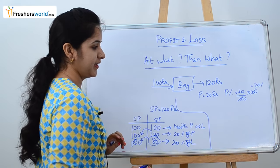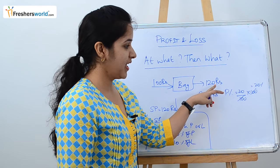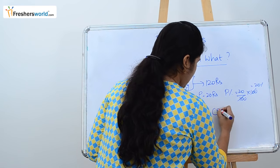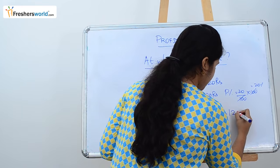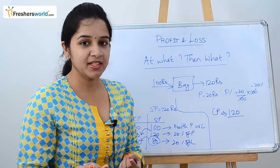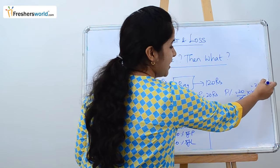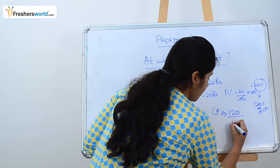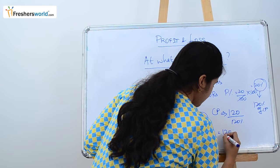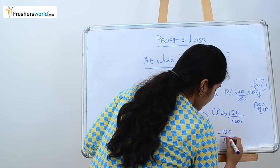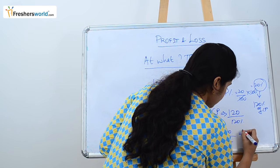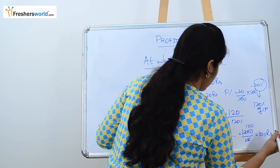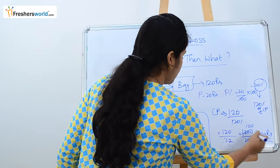Applying this: we are selling the bag at 120 rupees with a 20 percent profit, and we need to find the cost price. Cost price equals the selling price divided by the percentage at which it's sold. Since 20 percent profit means selling at 120 percent of cost price, cost price equals 120 divided by 1.2, which is 100 rupees.